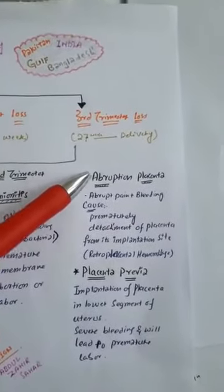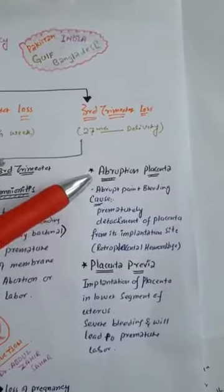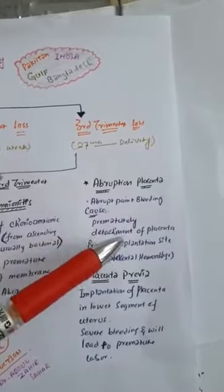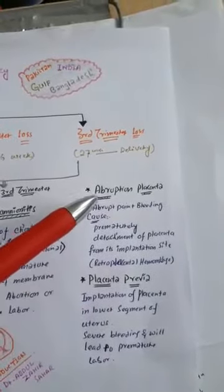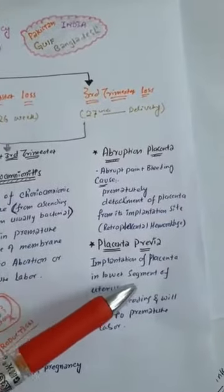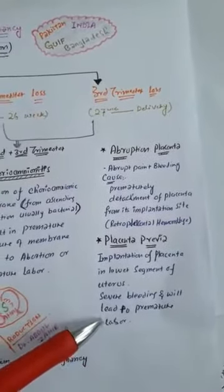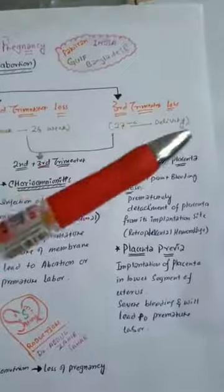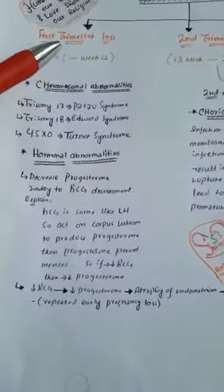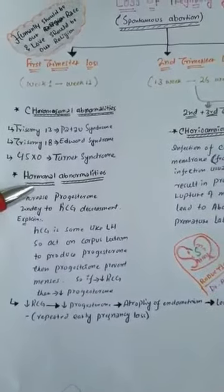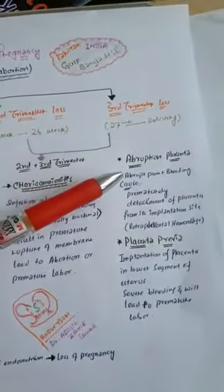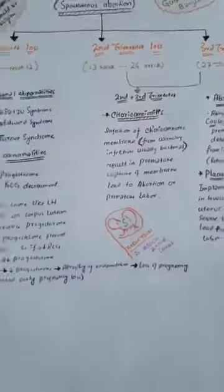In the third trimester, abruption placenta and placenta previa are the main causes. Abruption placenta means pain plus bleeding — a premature detachment of the placenta from its implantation site. Placenta previa is implantation of the placenta in the lower segment of the uterus, causing severe bleeding and premature labor. So to summarize: first trimester loss is due to chromosomal and hormonal abnormalities; second trimester due to chorioamnionitis; third trimester due to abruption placenta and placenta previa.